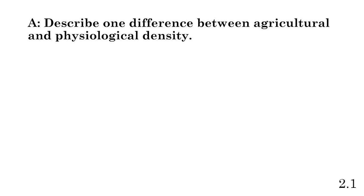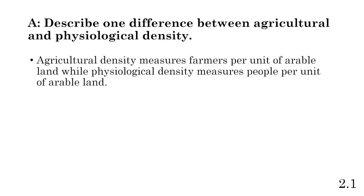So Part A is something simple — you don't need the stimuli at all. You're going to have to give descriptions or definitions of the concepts you'll be talking about. In this case, we're describing the difference between agriculture density and physiological density. The main difference is that agriculture density measures farmers per unit of arable land, while physiological density measures people per unit of arable land. Arable land, just remember, is land that can be farmed.